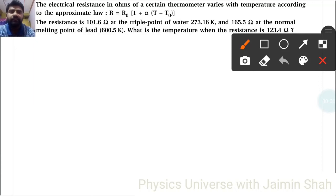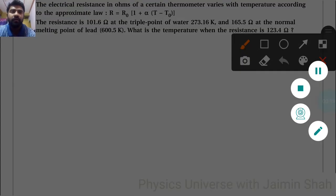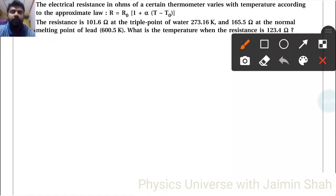The electrical resistance in ohms of a certain thermometer varies with temperature according to the law R = R₀[1 + α(T - T₀)]. The resistance is 101.6 Ω at the triple point of water (273.16 K) and 165.5 Ω at the normal melting point of lead (600.5 K). What is the temperature when resistance is 123.4 Ω?